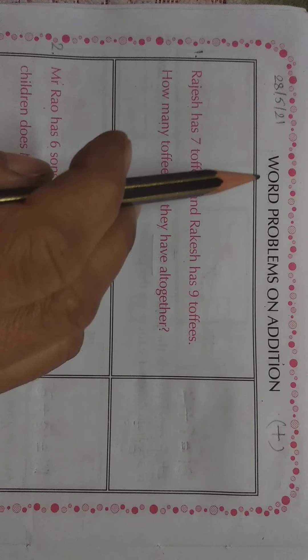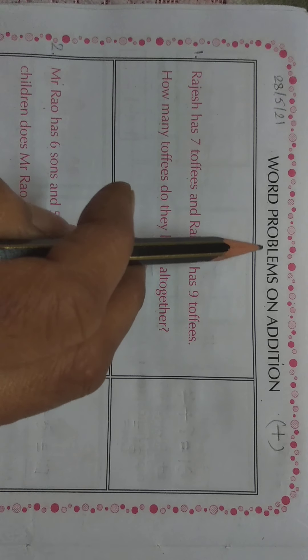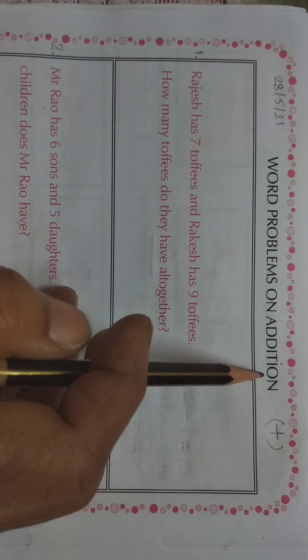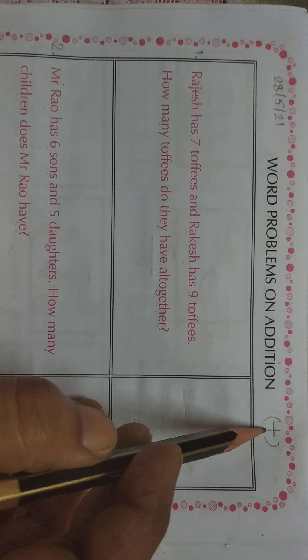Good morning dear children. Welcome back to math class. We will continue word problems on addition from page number 22. Yesterday we have done four word problems on addition from page number 21. Today we will complete rest of the sums. So children, open page number 22 in your math textbook and follow me. Let us read word problems on addition. The sign of addition is plus.